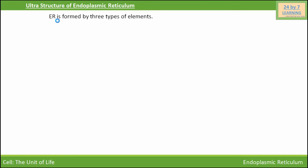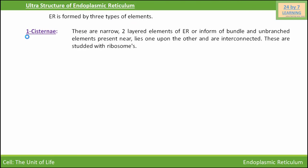Next, we discuss the ultrastructure of endoplasmic reticulum. Endoplasmic reticulum is formed by three types of elements. Number one is cisternae. These are narrow, two-layered elements of endoplasmic reticulum, or they may be in the form of bundles — unbranched elements that lie one upon the other and are interconnected. These are studded with ribosomes.